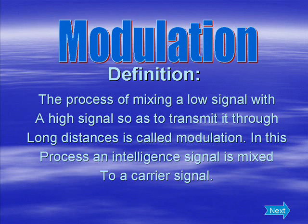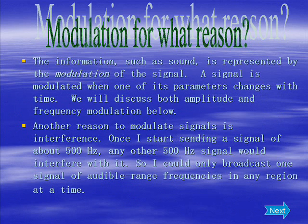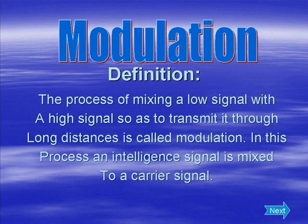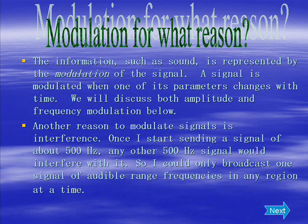There are three basic types of modulation. Number one is amplitude modulation, in which the amplitude is changed to transmit the wave properly. The second is frequency modulation, which changes the frequency of the transmitted wave in response to the amplitude of the original signal. The third is phase modulation, in which the phase of the signal is varied.